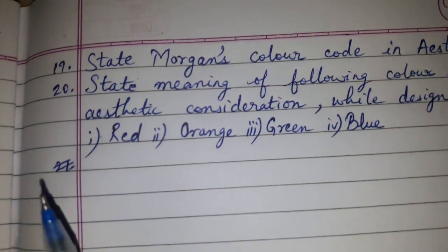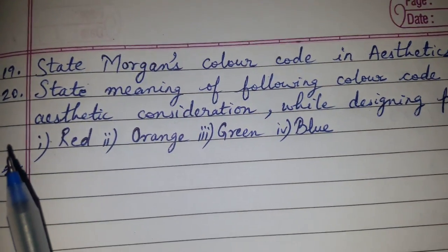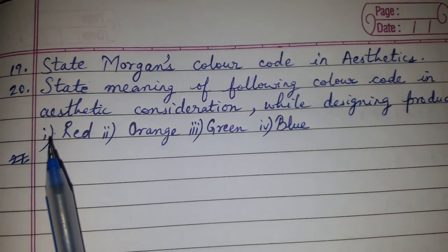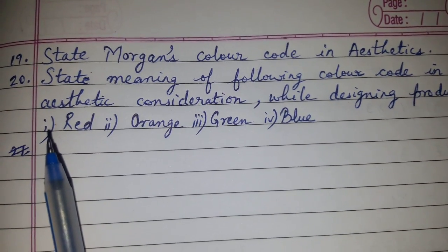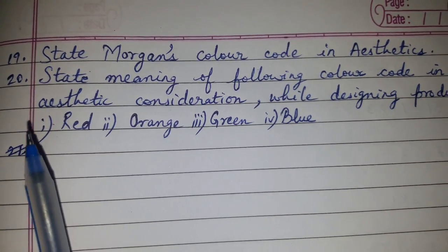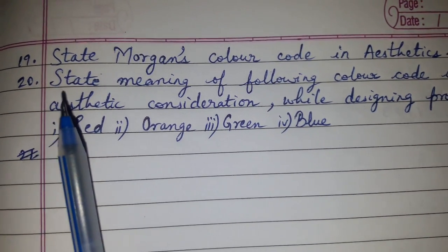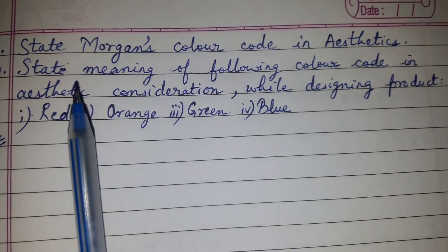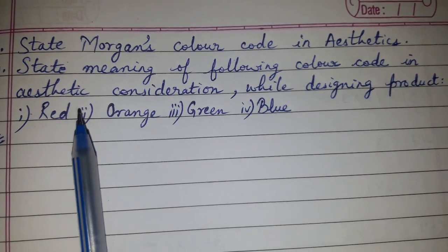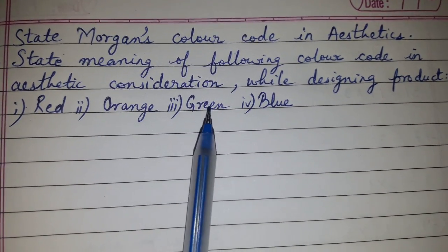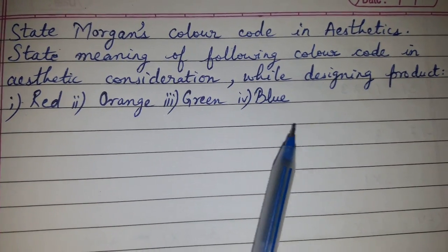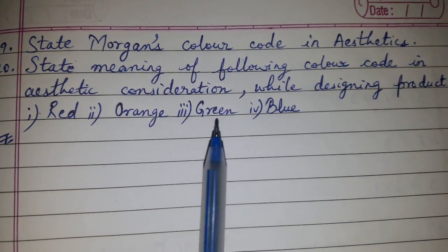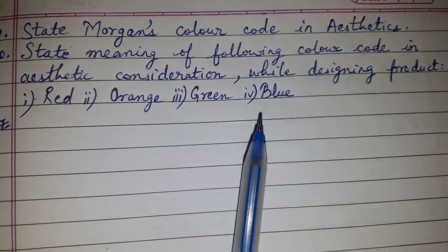Question number nineteen: state Morgan's color code in aesthetics. Question number twenty: state the meaning of the following color codes in aesthetic consideration while designing projects — Red, Orange, Green, Blue.